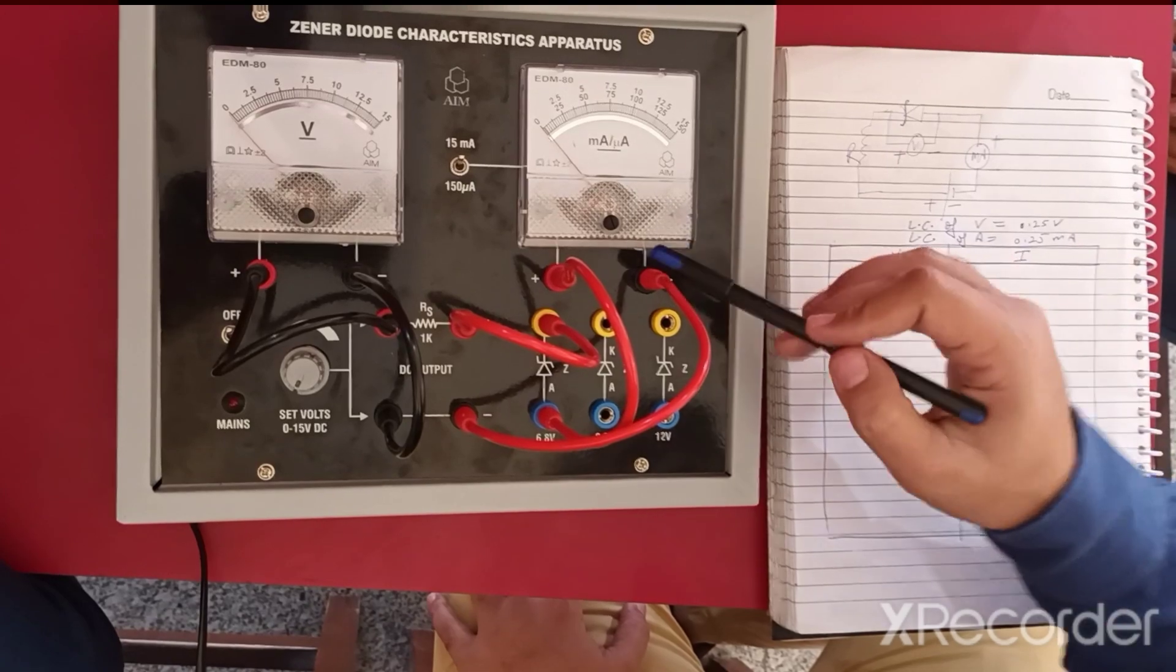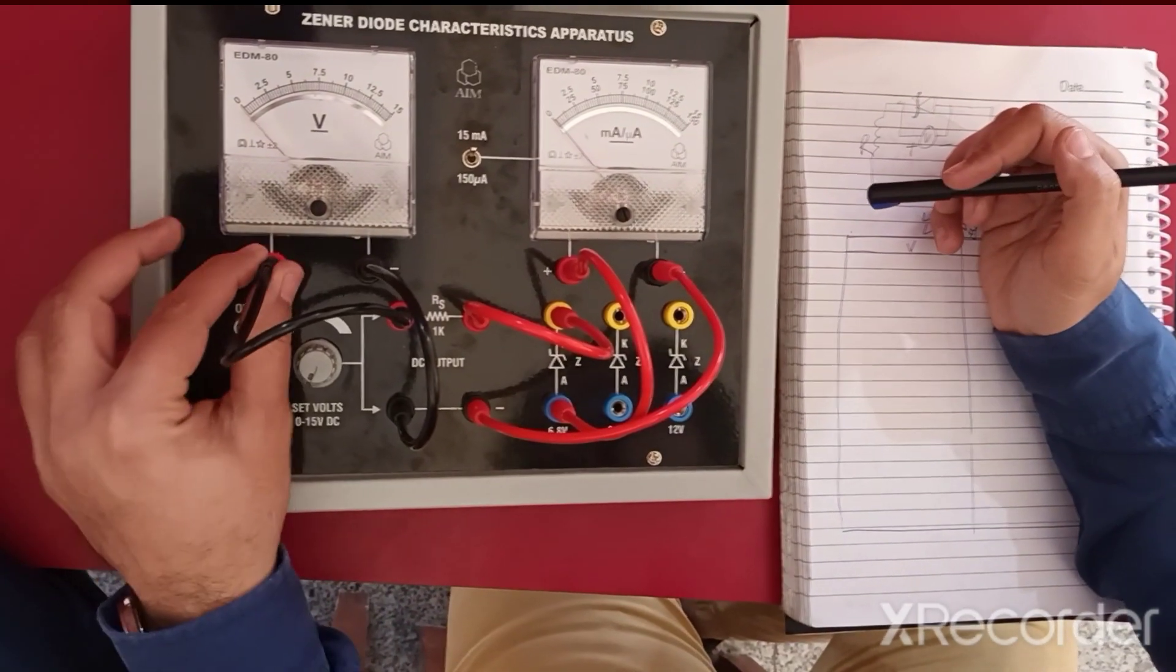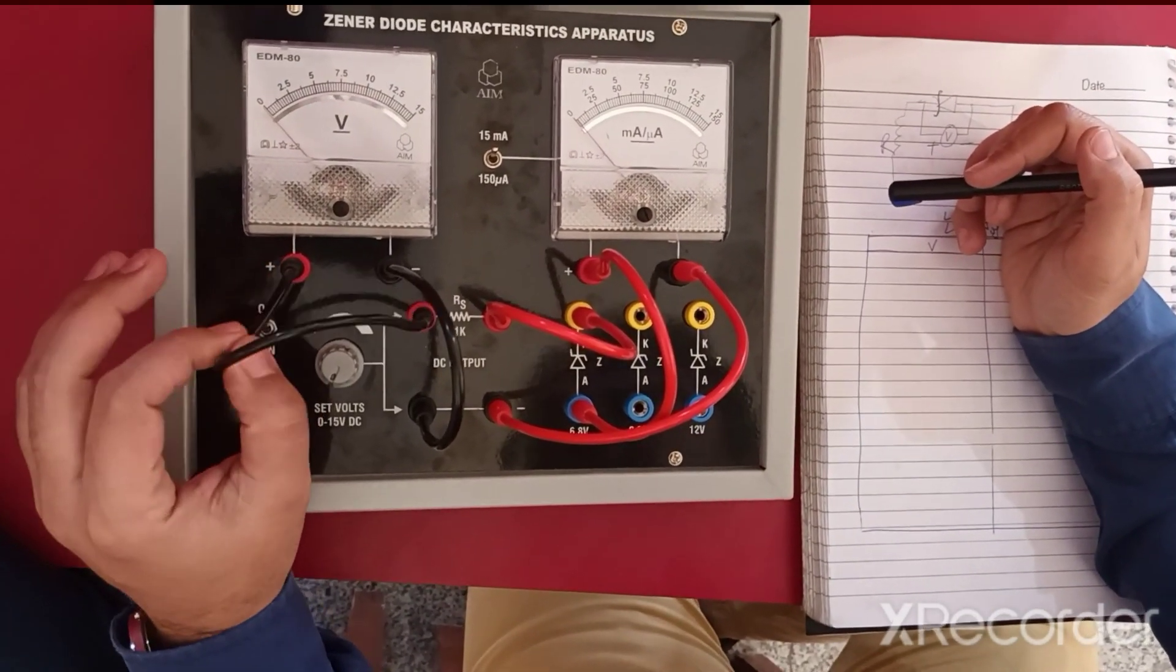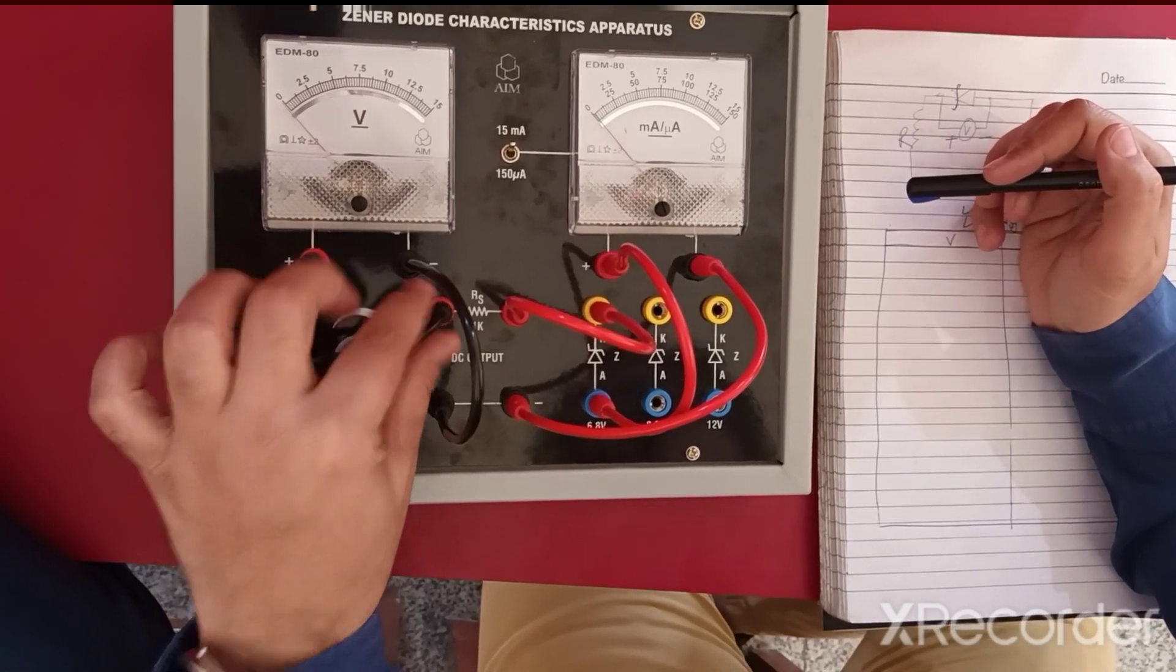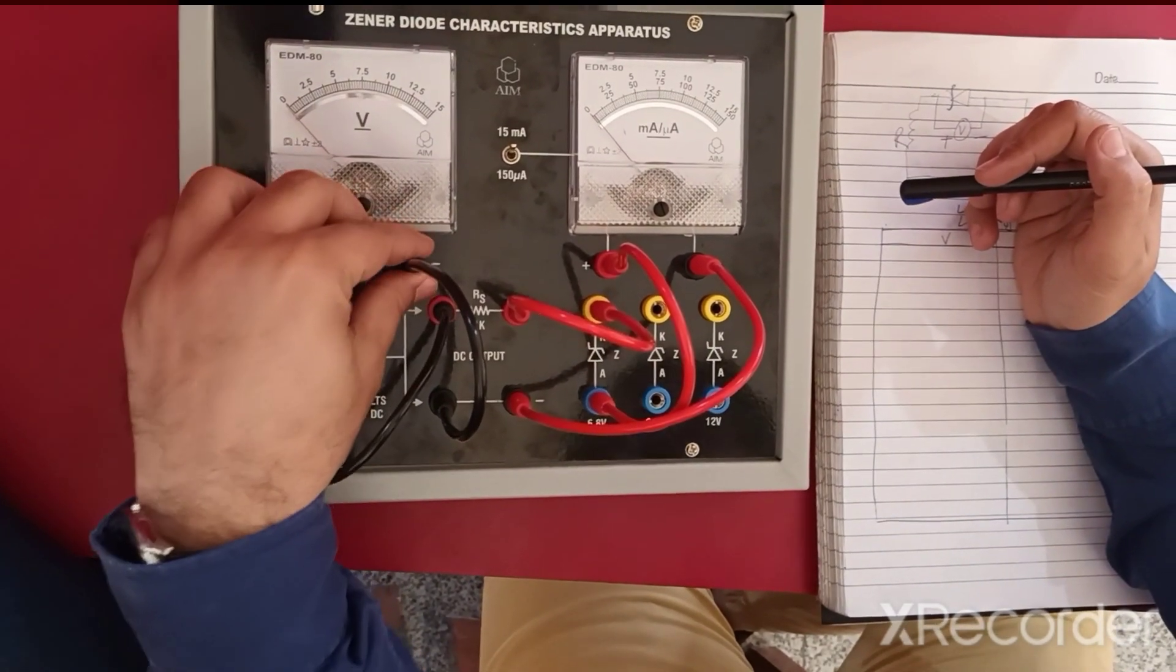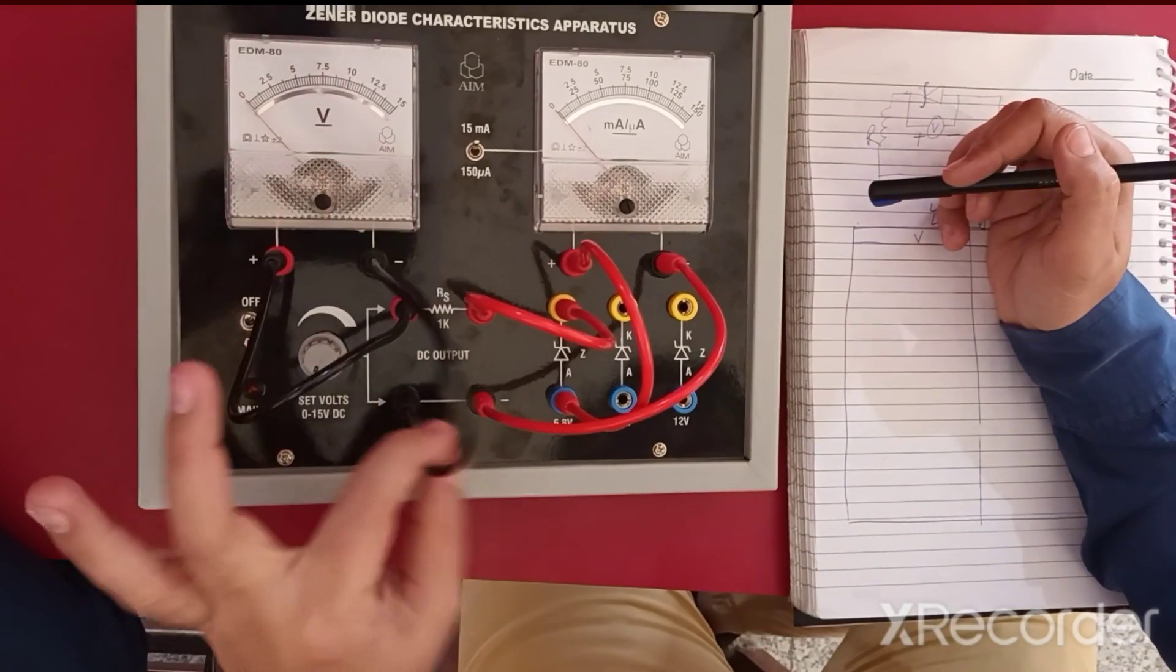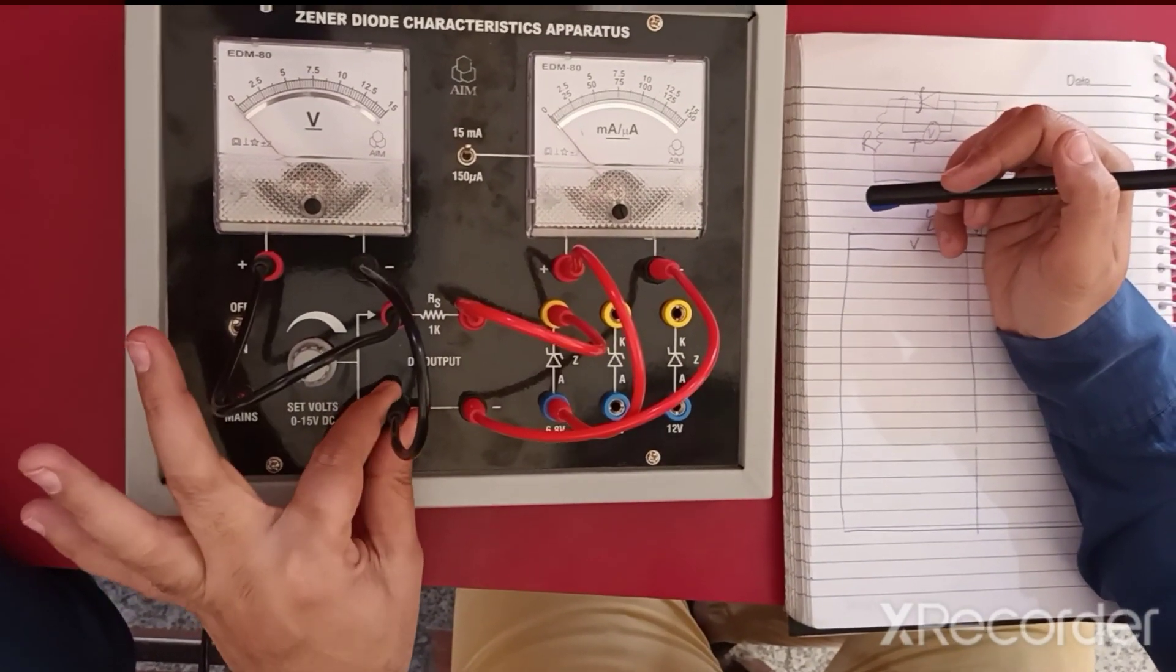Let's see. Here, the positive terminal of the voltmeter is connected with the positive of the battery, and the negative of the voltmeter is connected with the negative of the battery.